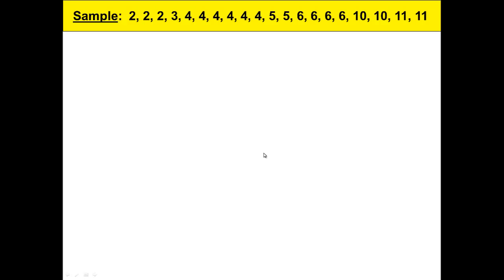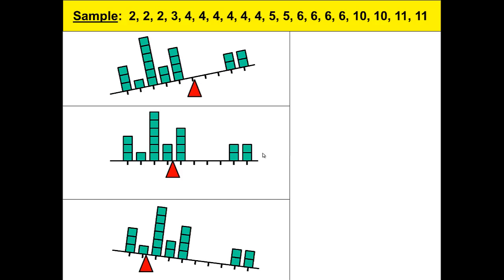I said that the mean was the balance point of the data. Before we calculate it with the formula, I want to show you a picture of that. The data contains three entries for the number 2. I show that by placing three blocks above this tick mark which will represent the 2.